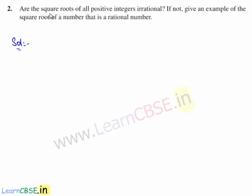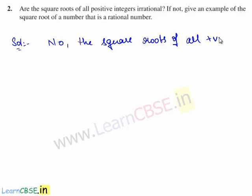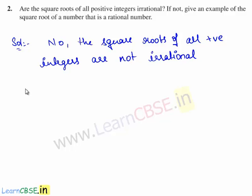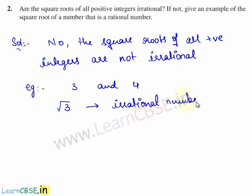The answer is no — the square roots of all positive integers are not irrational. Let us consider two positive integers: 3 and 4. √3 is an irrational number, but √4 = 2, which is a rational number.